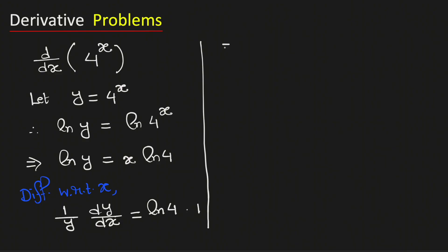From here we get that dy/dx equals y times ln 4. Now if we substitute the value of y, which is 4 raised to the power x, then dy/dx equals 4 to the power x times ln 4.